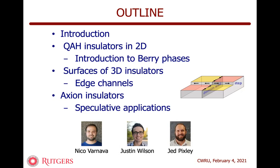The actual question I wanted to ask is: how robust are these axion insulators to disorder, compared to strong topological insulators? Basically it's the same story — topological properties of this kind are robust against perturbative disorder and robust against perturbative electron-electron interaction.